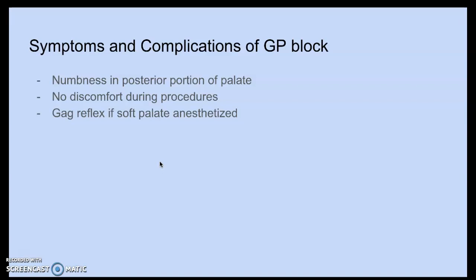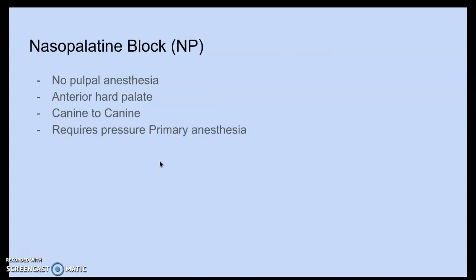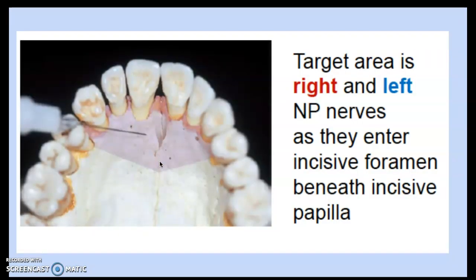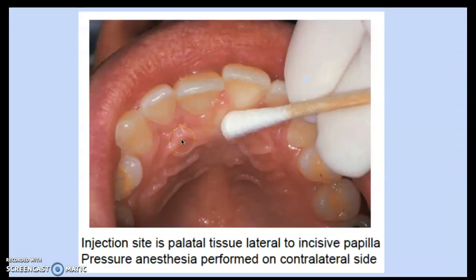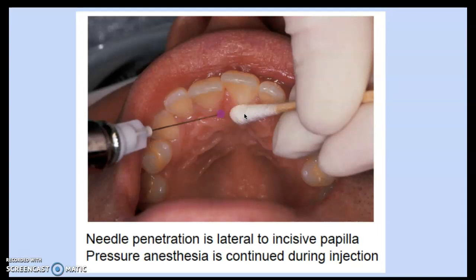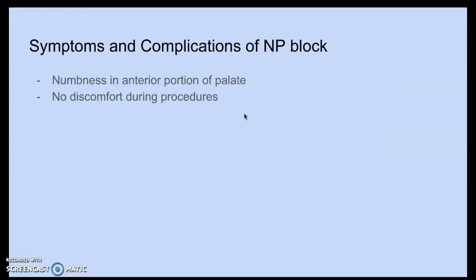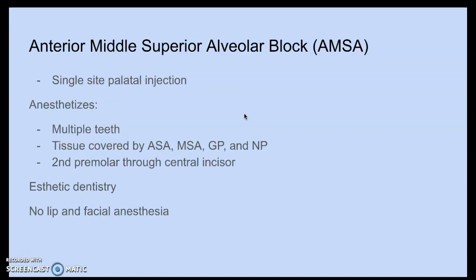Symptoms of the GP block include numbness in the posterior palate. If the soft palate is accidentally anesthetized, the patient may have a gag reflex and difficulty swallowing or speaking. The nasal palatine block provides no pulpal anesthesia; it covers the anterior hard palate canine-to-canine. The target is the left and right nasal palatine nerves as they enter the incisive foramen beneath the papilla. Pressure anesthesia is applied, with needle penetration lateral to the incisive papilla.